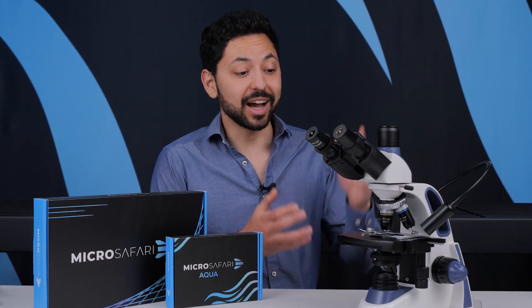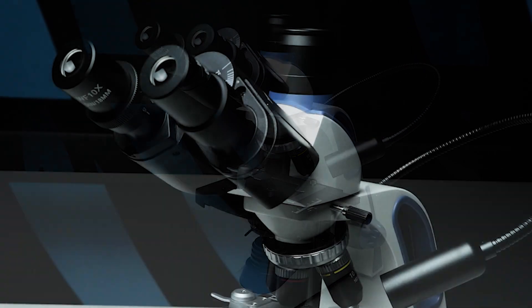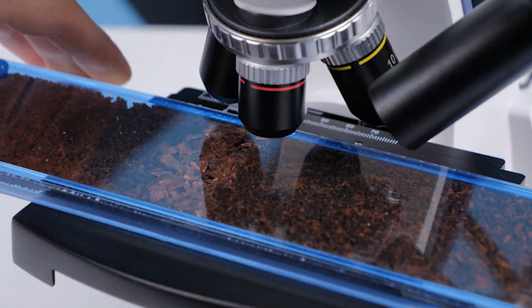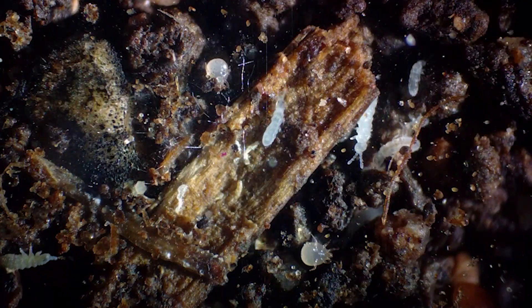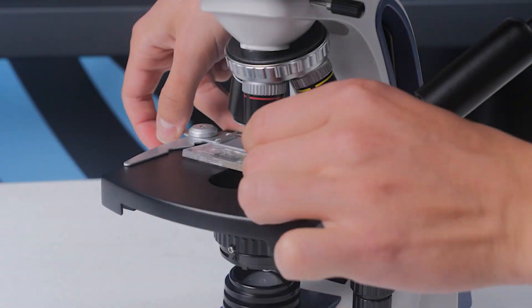If you're looking to buy a microscope, check out our one-of-a-kind Horizons kit. It includes everything that you need to go from microscope zero to microscope hero, and it's a universal microscope. We designed it to work with as many samples as possible in one kit.